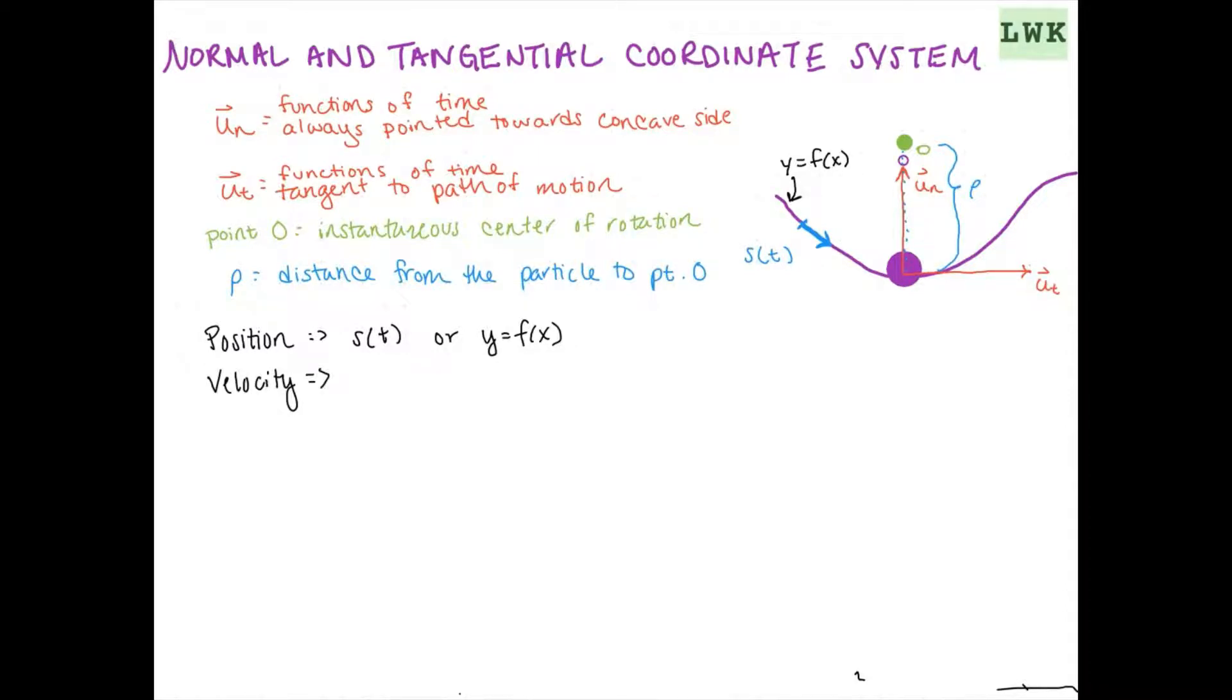Velocity, which is always tangent to the path, must be the tangent direction, ut. And velocity will have no component in the n direction, just by definition. So we can say velocity equals ds/dt times u of T. Or we can simplify that by writing the magnitude of the velocity times ut equals our velocity V.